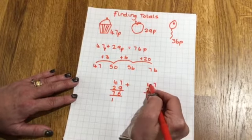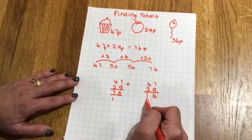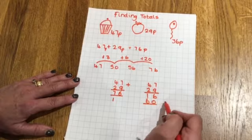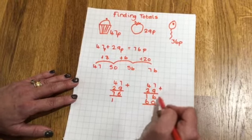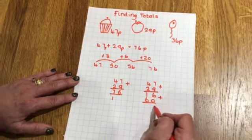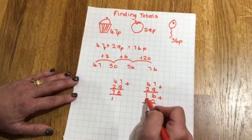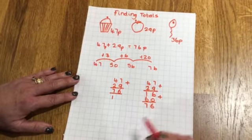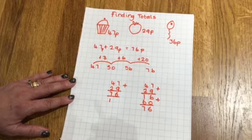And we know that 40 add 20 is 60. That becomes a lot easier to add. 16 add 60. 6 add 0 is 6. 1 ten add 6 tens is 7 tens. And the answer is 76.